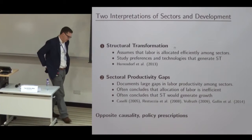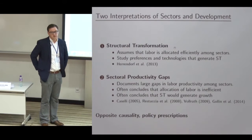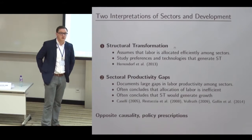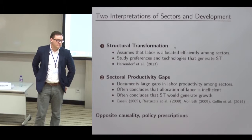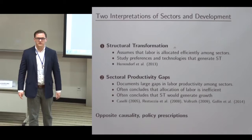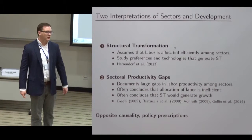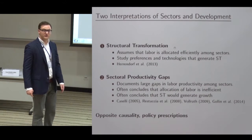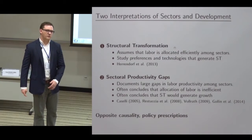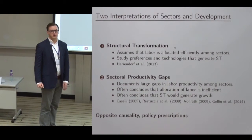This paper is motivated by two very divergent views on sectors and development. The first is the structural transformation literature, where people write down models assuming labor is efficiently allocated throughout development. The game is to find a sequence of preferences and technologies so that as a country develops, structural transformation is a consequence — driven by non-homothetic preferences or particular production function structures, causing the economy to grow and generate structural transformation.